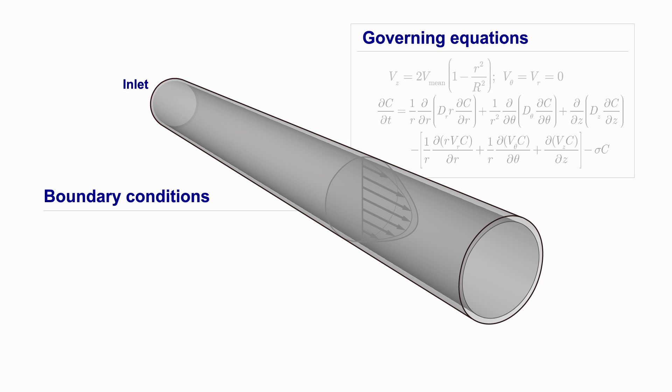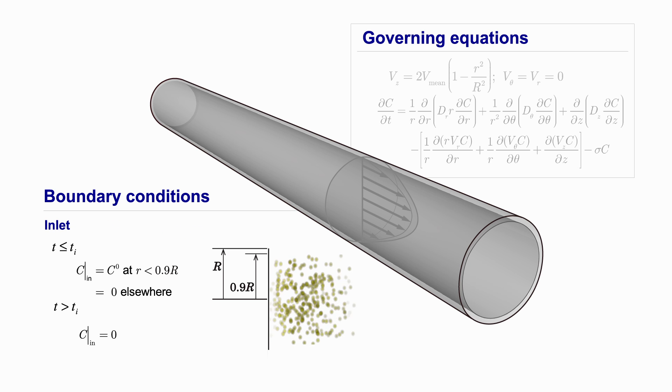At the inlet boundary of the artery, particles are released. At the outlet, a zero diffusive flux is assumed.